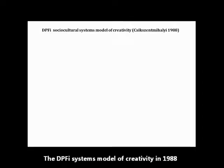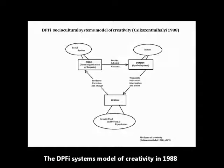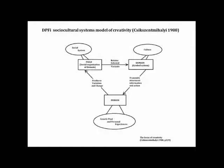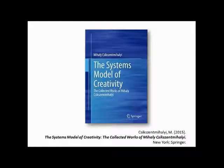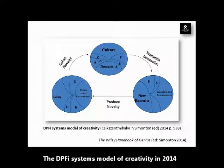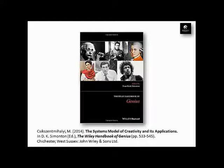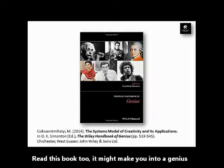This is how the Systems Model of Creativity looked in 1988 — basically the same thing, the Domain, Person, Field, Interaction Model, and that's in the book I mentioned, 'The Systems Model of Creativity: Collected Works.' But I'm going to look at the one from 2014, which is basically the same Domain, Person, Field, Interaction — Systems Model of Creativity by Csikszentmihalyi — but this one was in the Wiley Handbook of Genius, which you definitely should read, because you might become a genius from reading it.